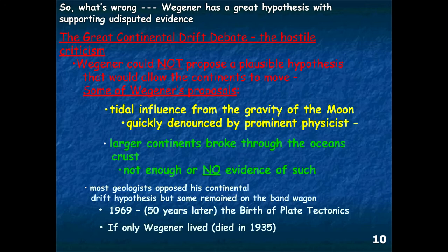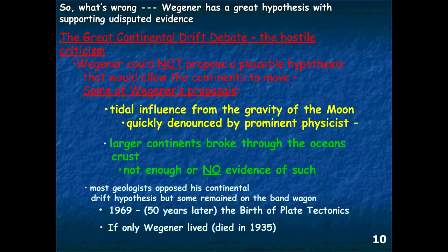One was tidal influence from the gravity of the moon—Wegener proposed that the gravitational pull of the moon had an influence on moving the continents. Physicists quickly denounced this, showing that the moon is only a quarter the size of Earth and there's no way its gravitational pull could move continents. Another hypothesis was that larger continents broke through the ocean's crust, but there really isn't any evidence in the geologic record to support that.